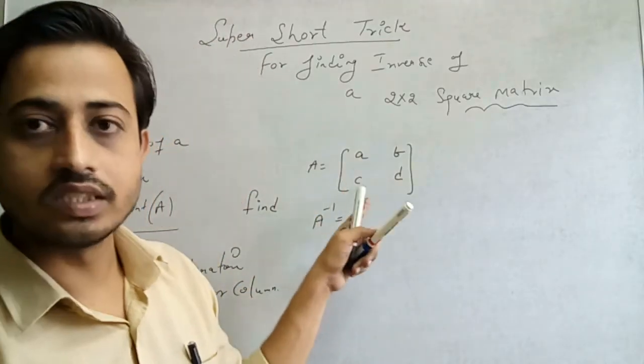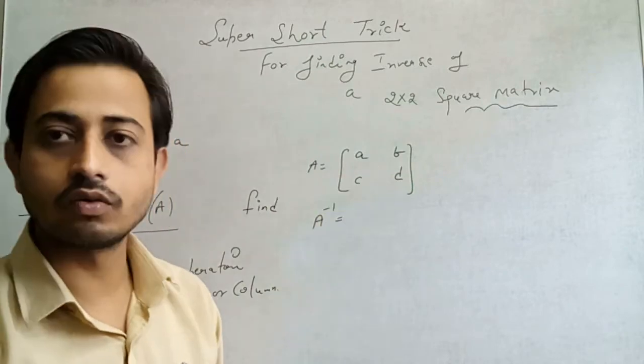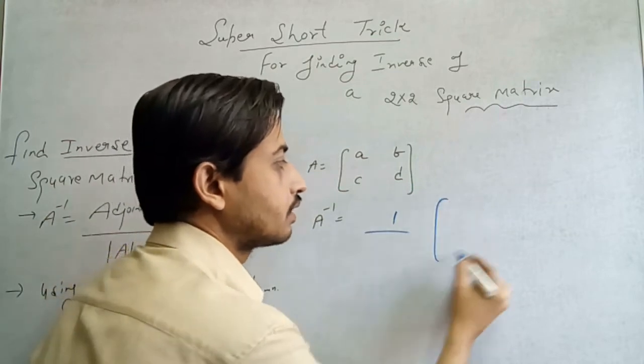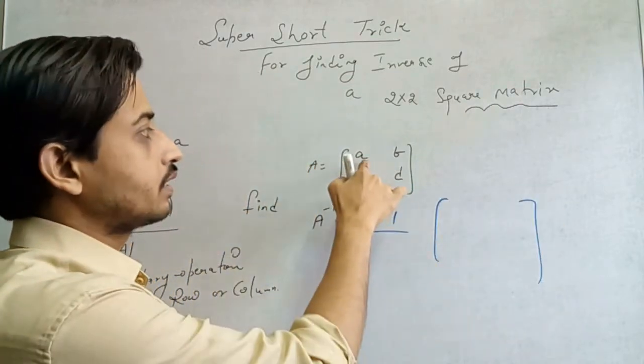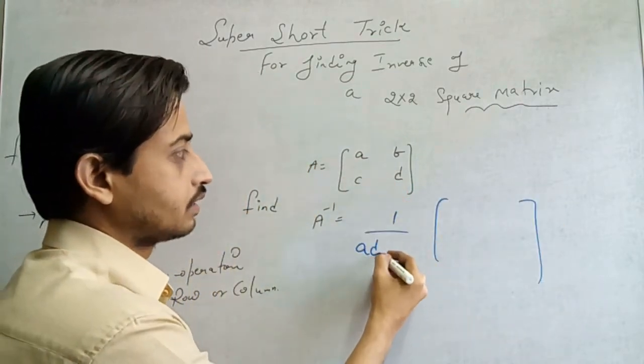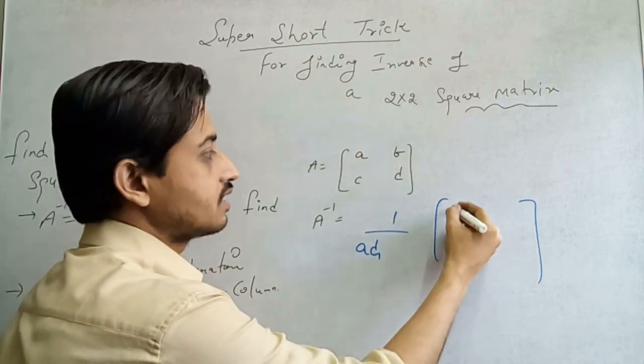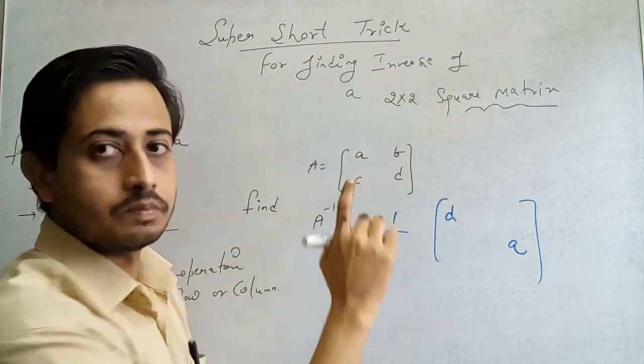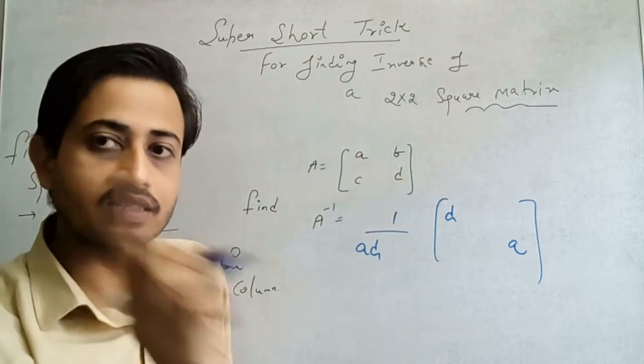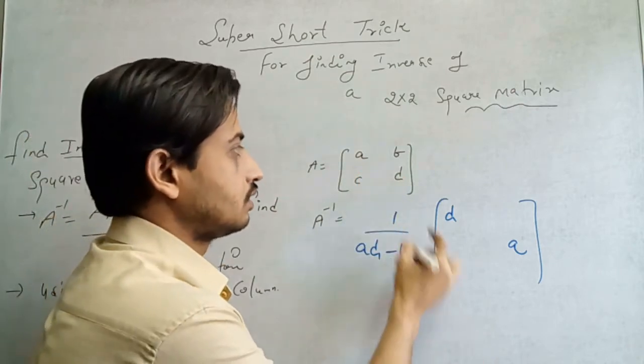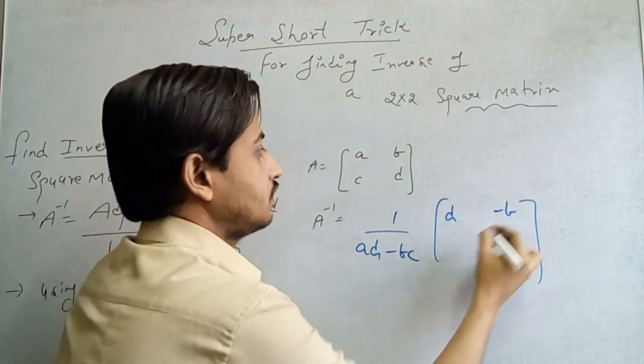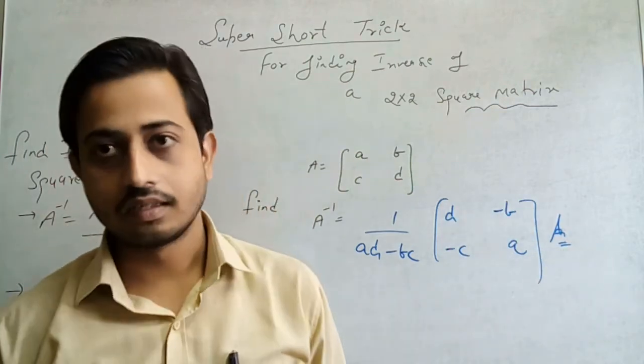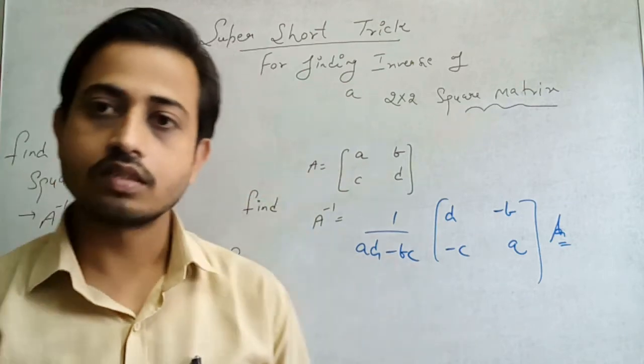If A is equal to this matrix: A, B, C, D, and you have to find out the inverse, then what will be the answer? We have to write 1 by and make a matrix. Now, multiply A into D, AD, and we have to interchange this element, we get D and A. Now, we have to multiply B into C, BC, and we have to change the sign. We get minus BC and change the sign here: minus B and minus C. This is your answer.